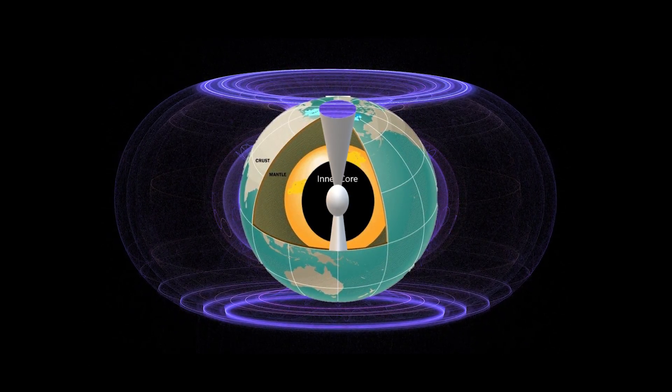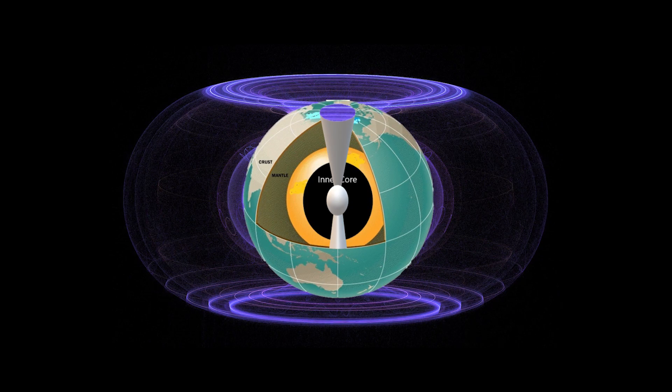The magnetosphere, in turn, protects and shields the bubble-like atmosphere of the planet.